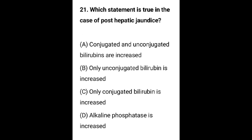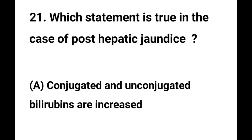Question number 21. Which statement is true in the case of post-hepatic jaundice? Option A - Conjugated and unconjugated bilirubins are increased. Option B - Only unconjugated bilirubin is increased. Option C - Alkaline phosphatase is increased. The correct answer is Option A. Conjugated and unconjugated bilirubins are both increased in post-hepatic jaundice.